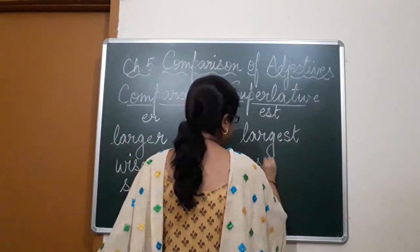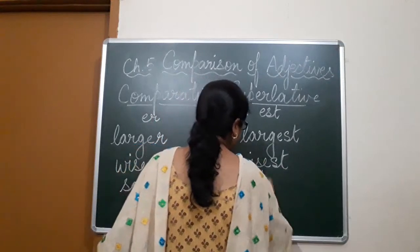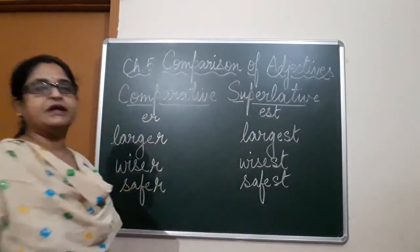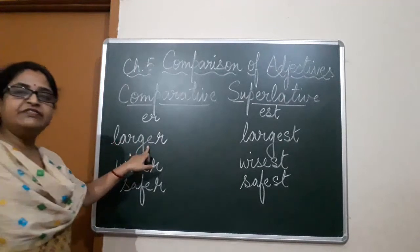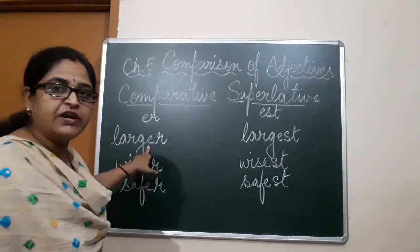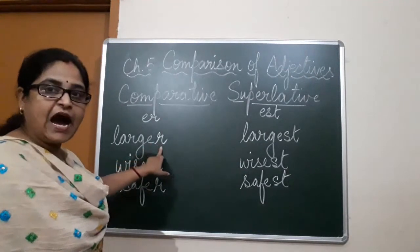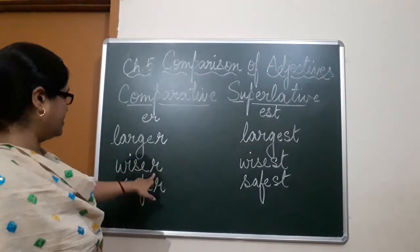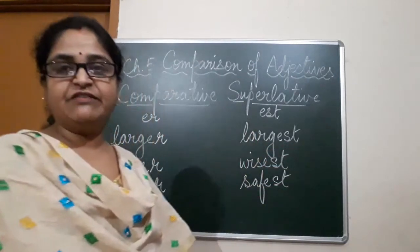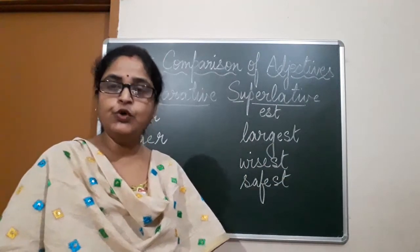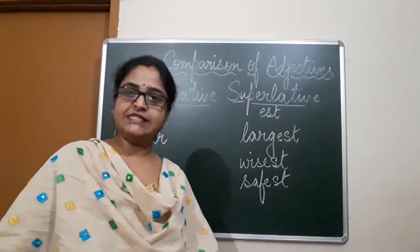Wisest — wise is already there, you add S-T. Safest — safe is already there, you add S-T to make it superlative adjective. I hope all the rules are clear. When E is already at the end of the word, you add only R for comparative and just S-T for superlative. You will complete your work in your workbook and I will provide you the PDF of the same. Thank you.